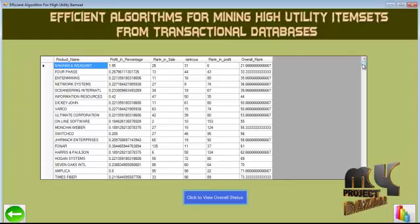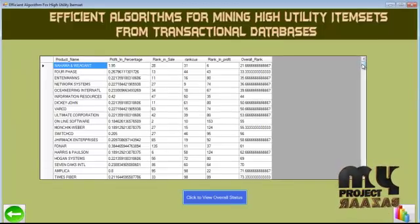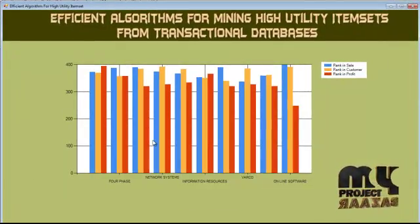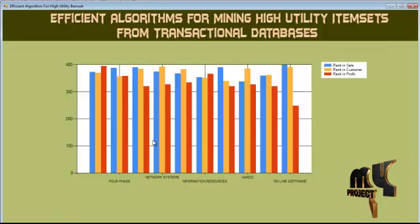This is the resultant tree. This is the resultant information of the transaction database after formatting the tree structure using the Utility Pattern Growth and Utility Pattern Growth Plus algorithms. This graph visually represents the products with the highest profitable rate and highest customer rate. We implemented a framework for the automation of information retrieval from the transaction database in the most effective manner, minimizing execution time and resource consumption. Thank you.